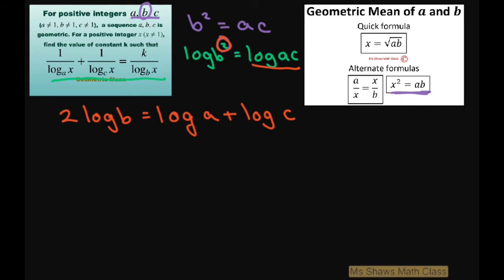Now I'm going to use substitution and fill all this in. So we have 1 divided by log a of x. This is going to equal log of a divided by log of x. And I'm using my change of base formula. And then this one is going to be log of c divided by log of x.